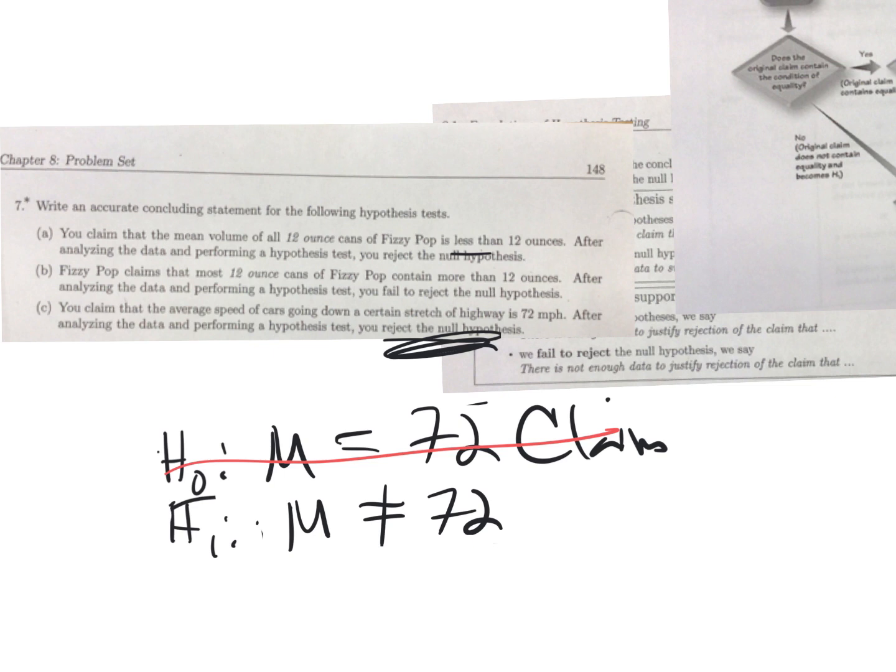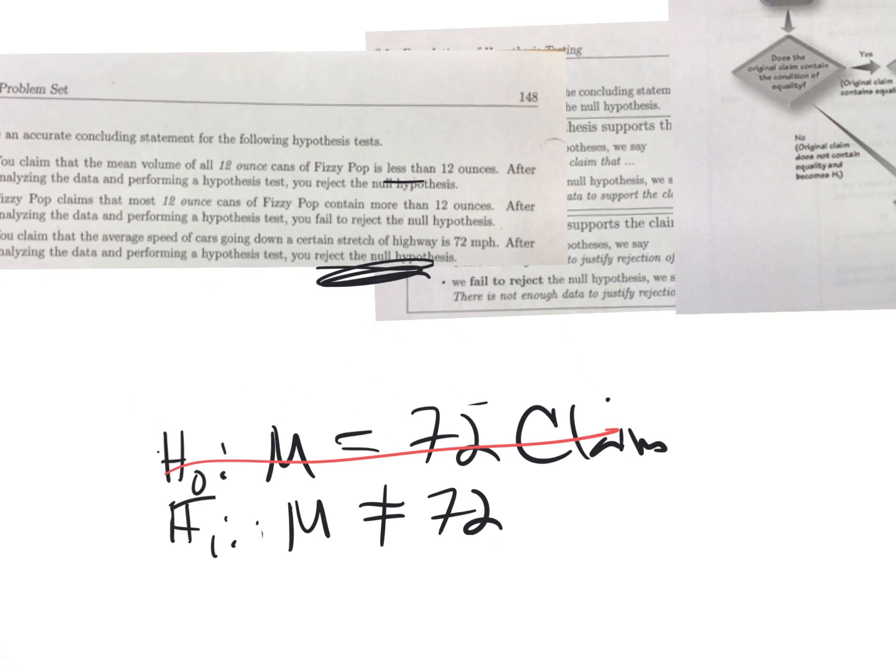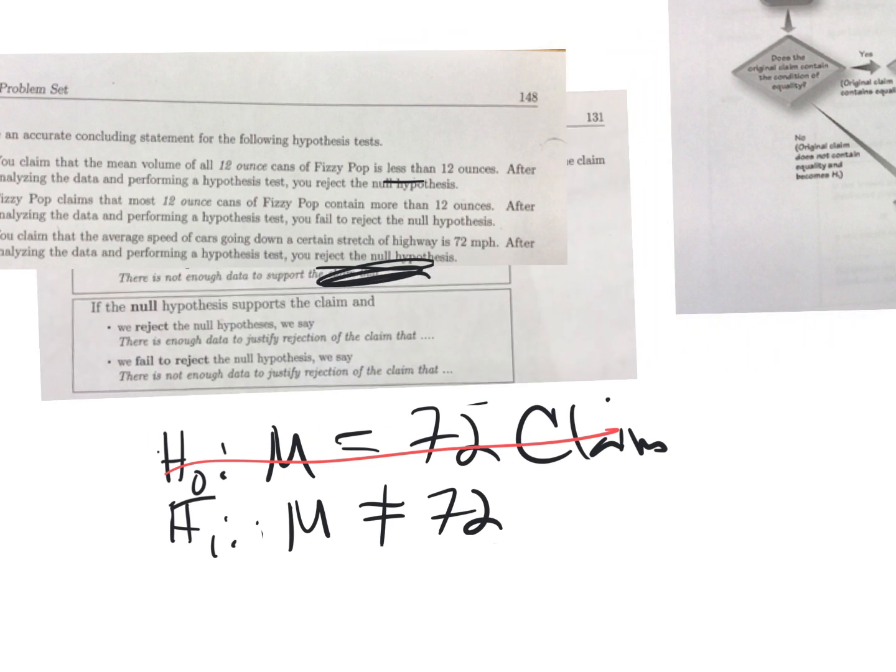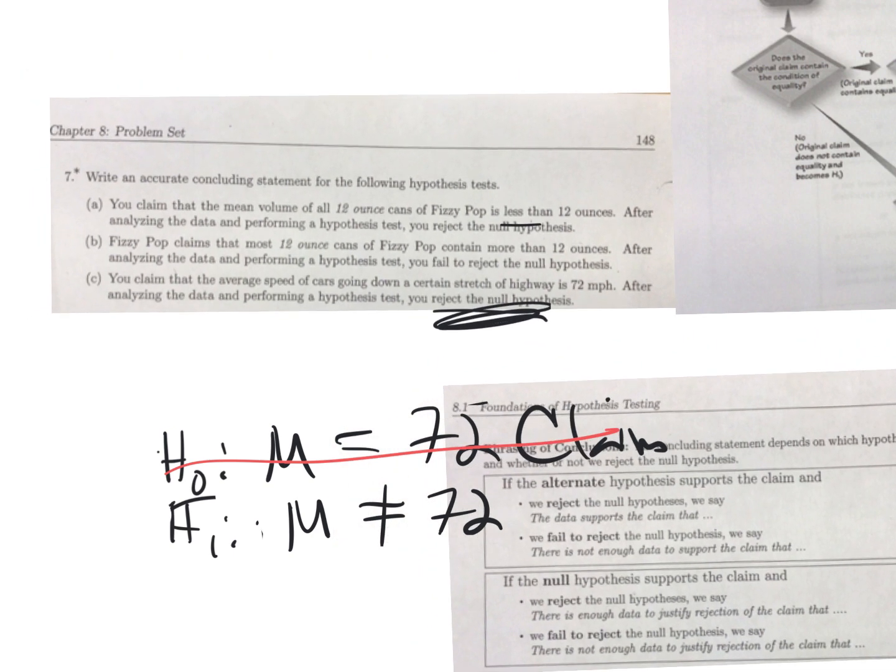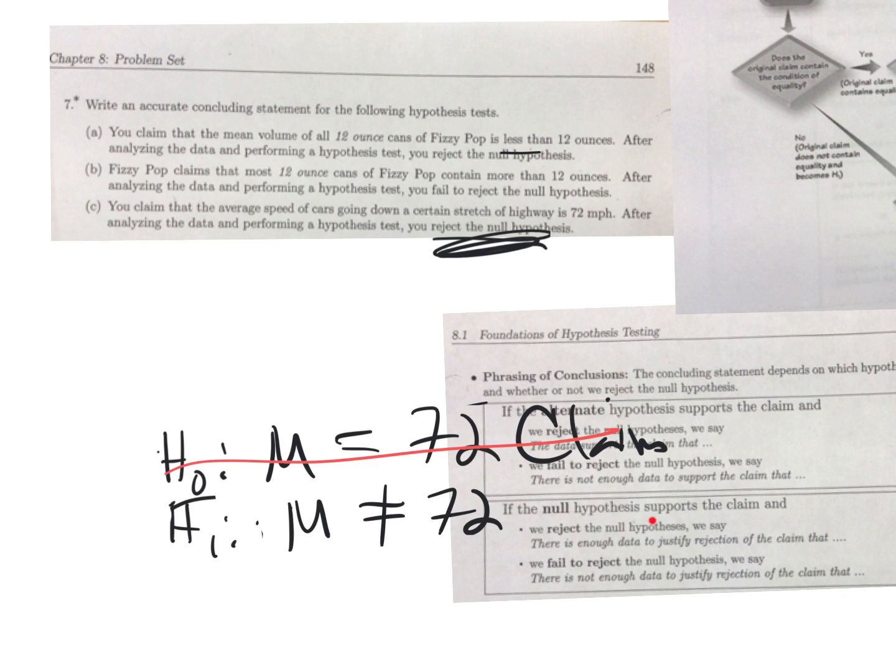Let's see how Dr. Stevens does this. H0 is the claim, so we look at this bottom section. We reject the null hypothesis, so there's enough data to justify the rejection of the claim that the average speed on this stretch of highway is 72. The data shows that it's different. If we use the flowchart, H0 is the claim, and we did reject it, so there's sufficient evidence to warrant the rejection of the claim that the speed is 72. See how this is very similar?